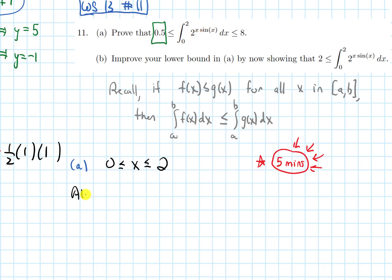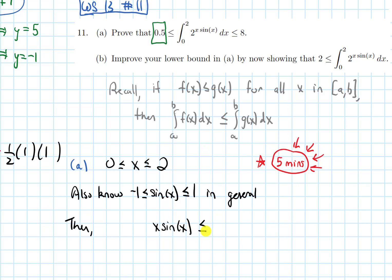We know that sine x is always between negative 1 and positive 1 in general. If we think about x times sine x, what's the biggest it could possibly be? The biggest x could be is 2, and the biggest sine could be is 1. So the biggest x times sine x could possibly be is 2 times 1, which is 2. Maybe x times sine x never actually equals 2, but this is the biggest it even has a chance of being.